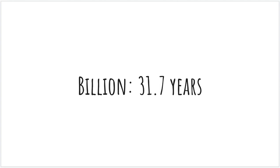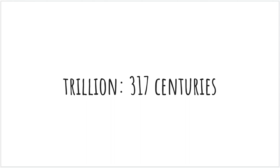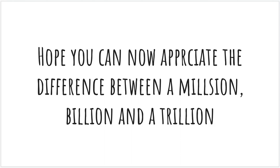So to sum up: a million is 11 and a half days, a billion is 31.7 years, and a trillion is 317 centuries. Hope you can now appreciate the difference between a million, billion, and a trillion. Thank you, and please share if you think this is useful.